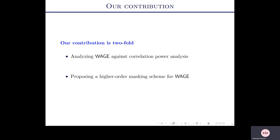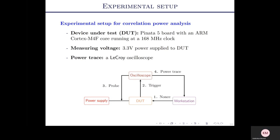Our contribution in this paper is twofold: we first analyze WAGE against correlation power analysis, and then we propose a higher-order masking scheme to protect against such attacks. For our experimental setup, we run the WAGE algorithm on a device under test (DUT), with an oscilloscope collecting power traces and a workstation controlling the DUT by providing nonces and recording the power traces.